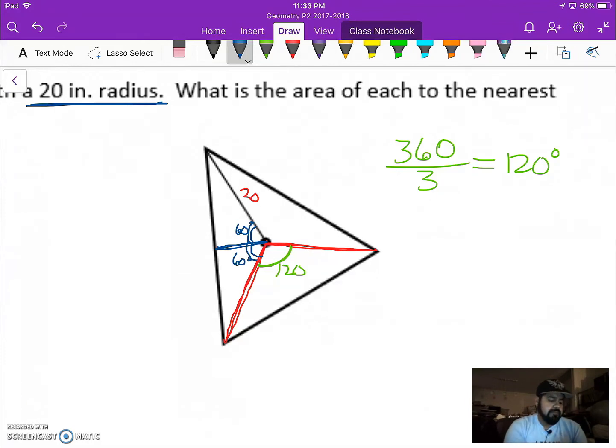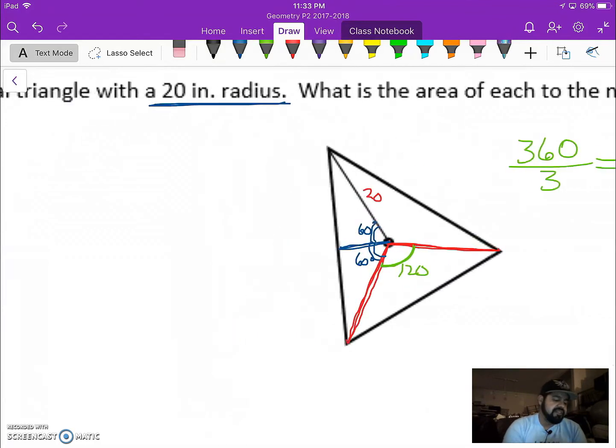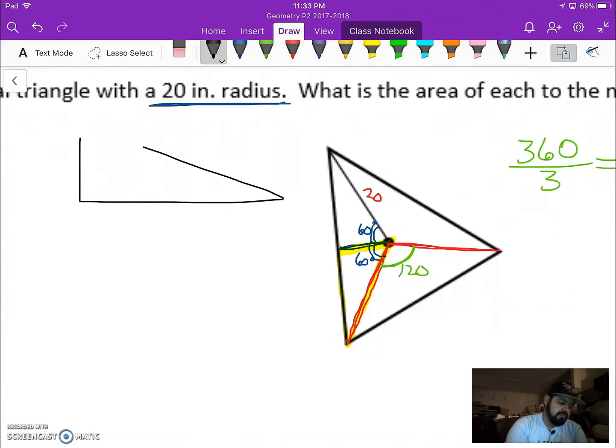Well, again, back to what we know. This is again a special right triangle. Let me draw it off to the side here. So we know that that top angle was 60. We know our radius was 20, which means that this bottom right corner is going to be 30 degrees.